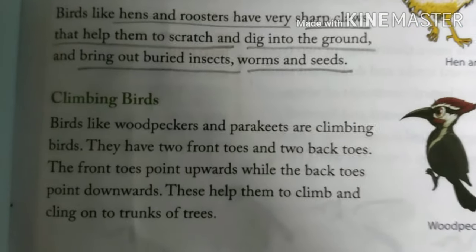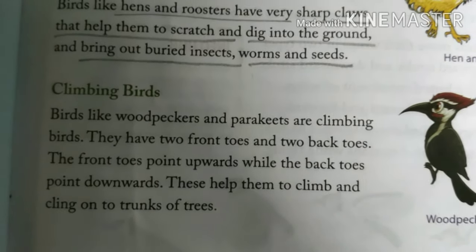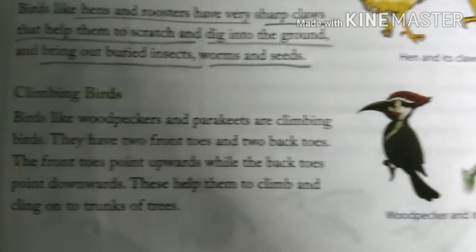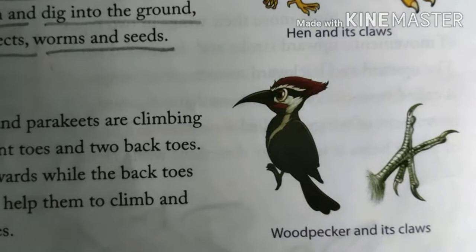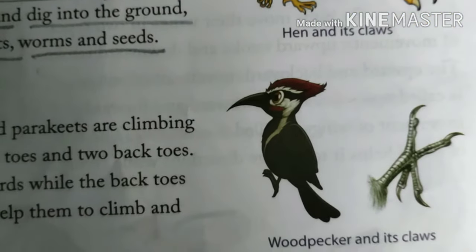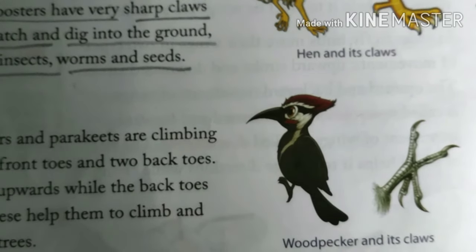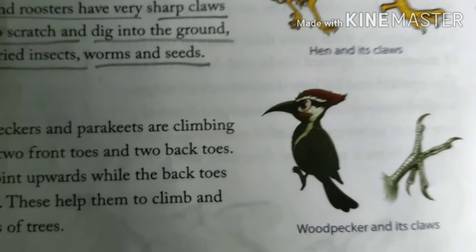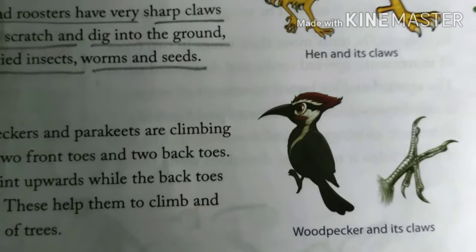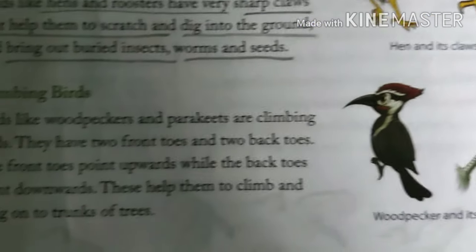Next we have climbing birds. Birds like woodpecker, parakeet, and parrot are climbing birds. They have two front toes and two back toes. This arrangement helps them to grip tree trunks and climb up the trees.